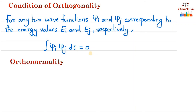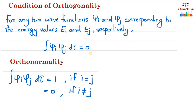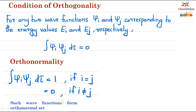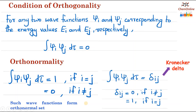We can combine both normalization and orthogonality conditions: ∫ψᵢ · ψⱼ dτ = δᵢⱼ, where δ is known as the Kronecker delta. δᵢⱼ = 0 if i ≠ j, and δᵢⱼ = 1 if i = j.